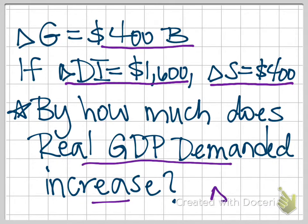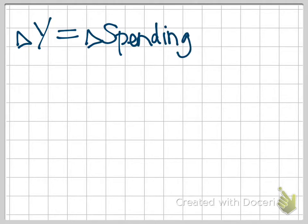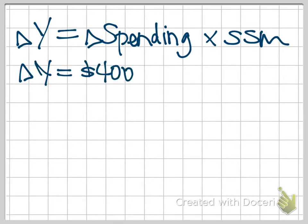So what is, here we're basically trying to find delta Y, the change in real GDP demanded. So you should know, based on that other video, that we find the change in real GDP demanded by taking some change in spending, again in my last example it was investment spending, and multiplying this times our simple spending multiplier. And so far we know the change in spending, so we know that the government is going to increase their spending by $400 billion.